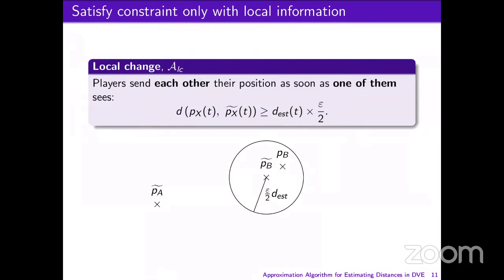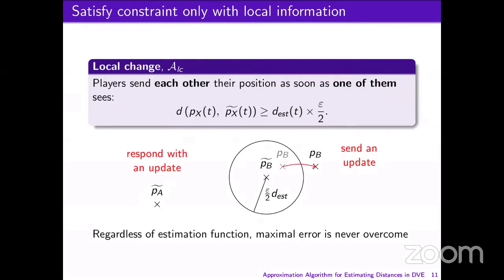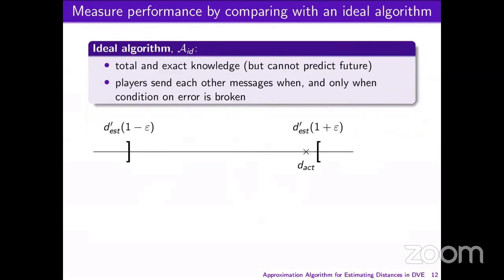If we look at the knowledge of player B, we can represent this by a set of positions that have a distance to the estimated position of player B smaller than this maximum value. As soon as the actual position of B gets outside this set, he will have to send an update, and player A will respond immediately by also sending an update. We can prove quite easily that regardless of the estimation function, the maximal error is never overcome with LocalChange.